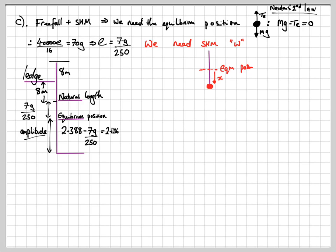Now, for simple harmonic motion, I need to know what the value of W is. So, I'm just going to have a look at the general case, i.e., when the object is at a displacement of x from the equilibrium position I'm taking downwards as positive. So, I have 70g minus t equals 70x dot dot. It's just Newton's second law.